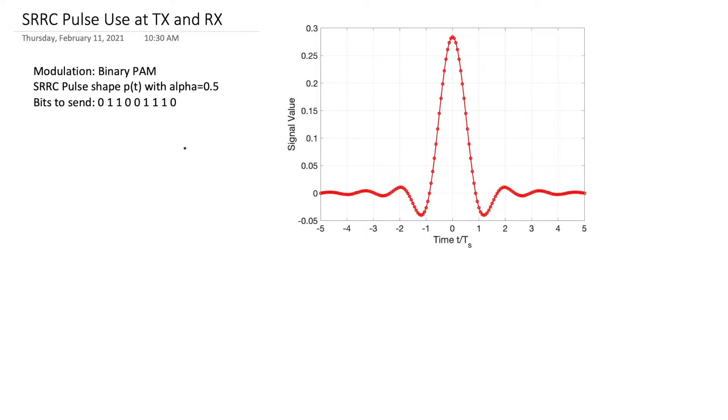What I'm going to do is I'm going to send a few bits from the transmitter and show how the transmitted signal looks and then show how the received signal looks. So remember that the transmitter, we're going to send a signal s of t and that signal is going to be a sum of amplitude modulated versions of this pulse shape.